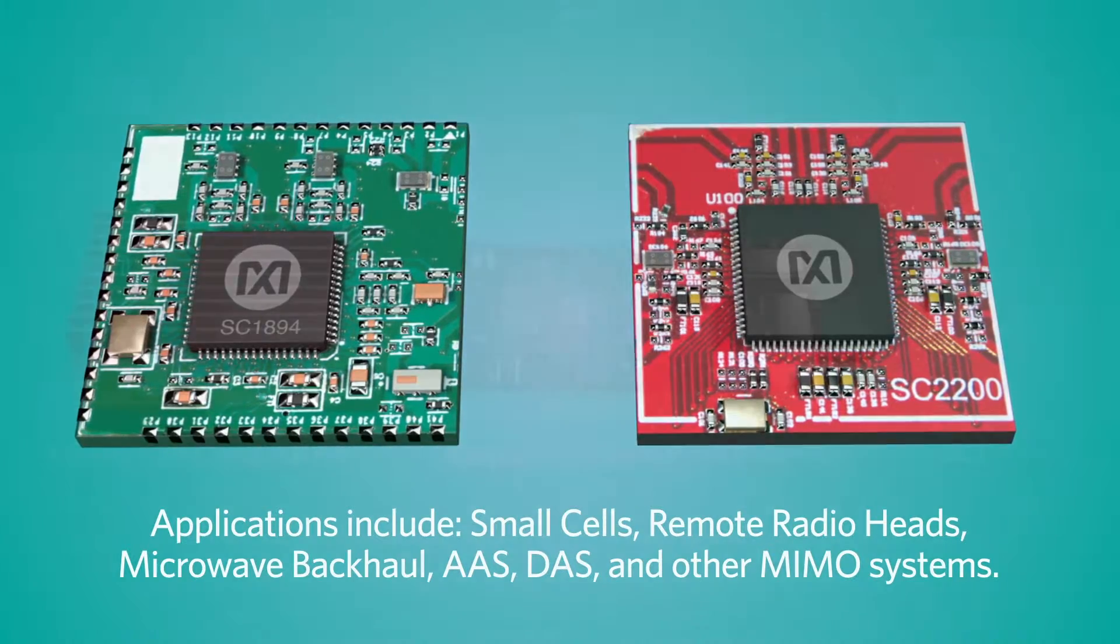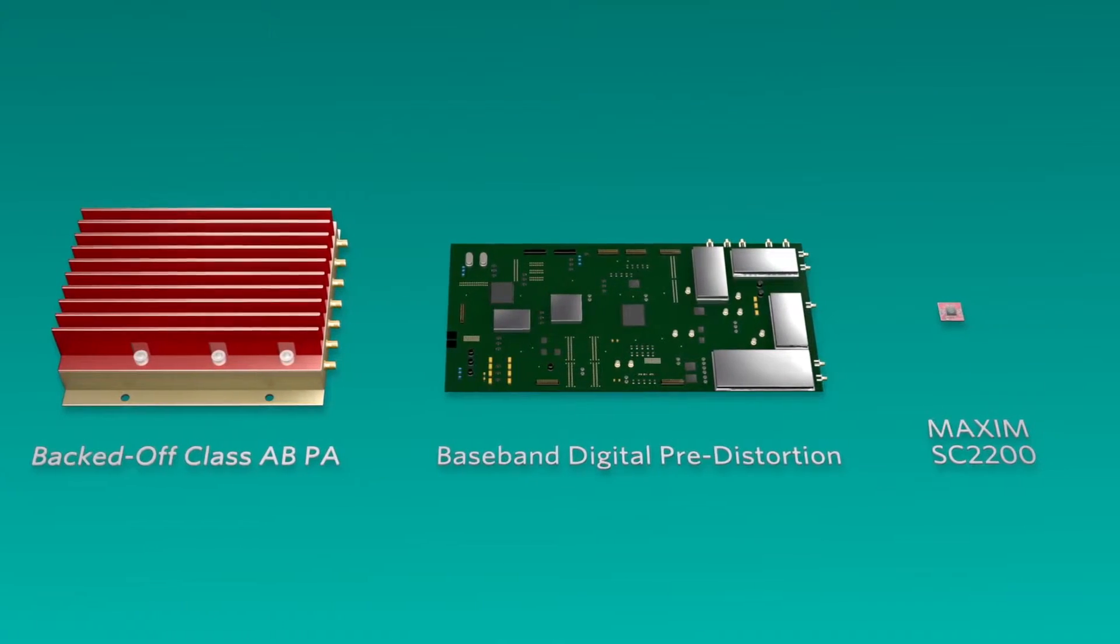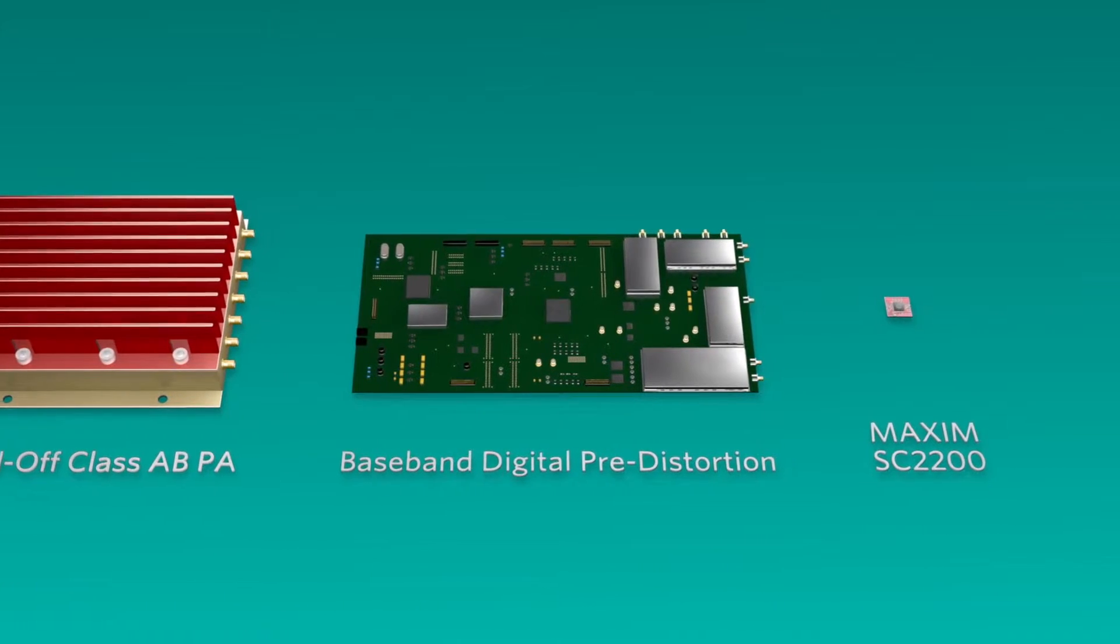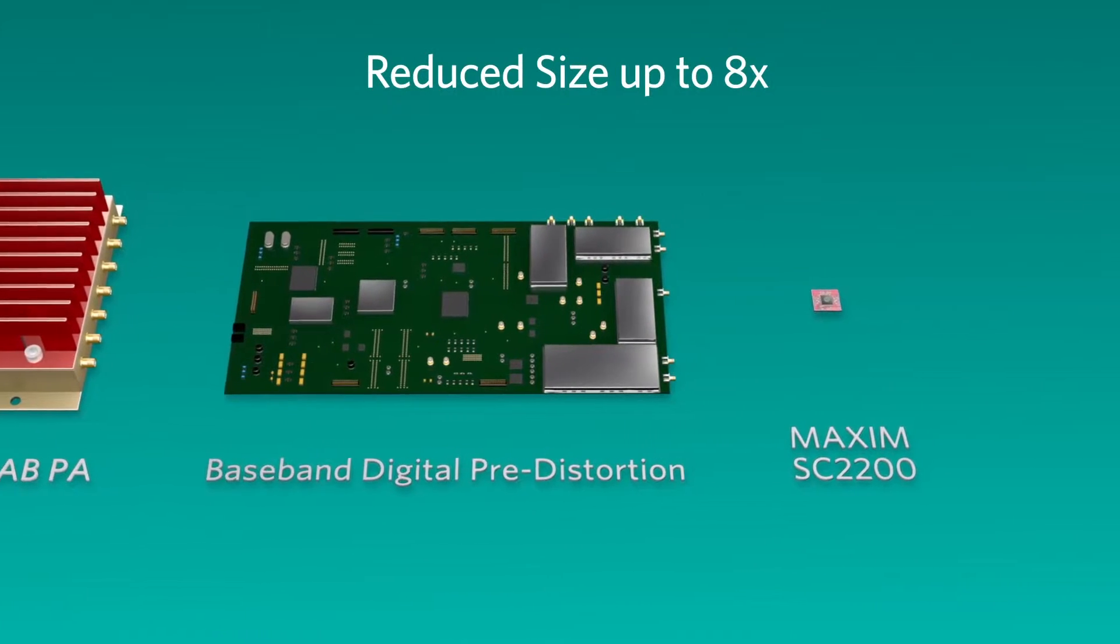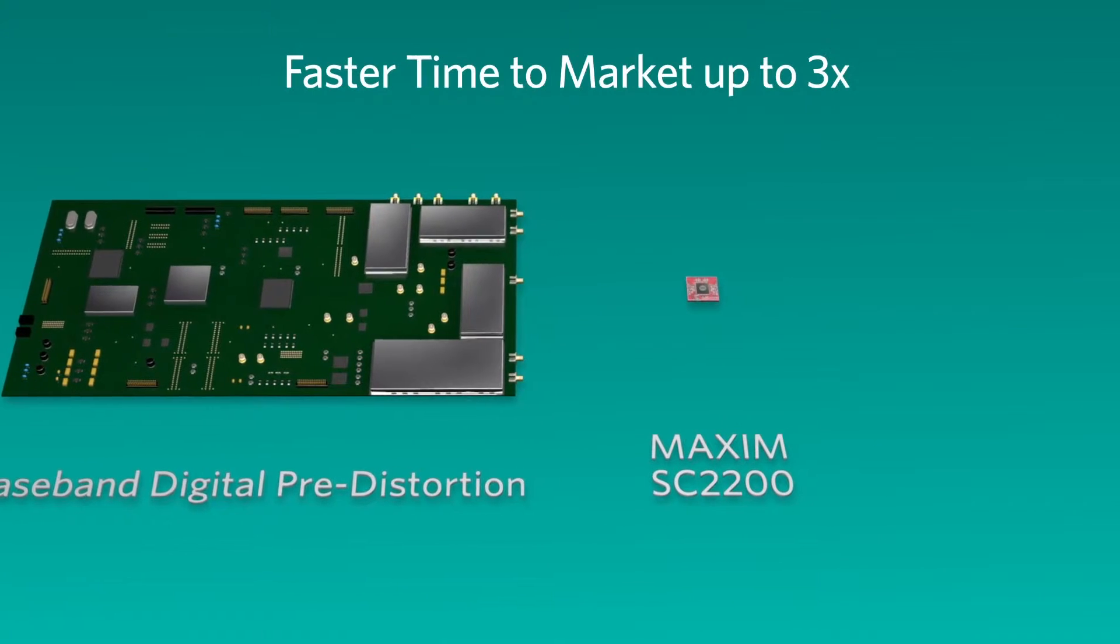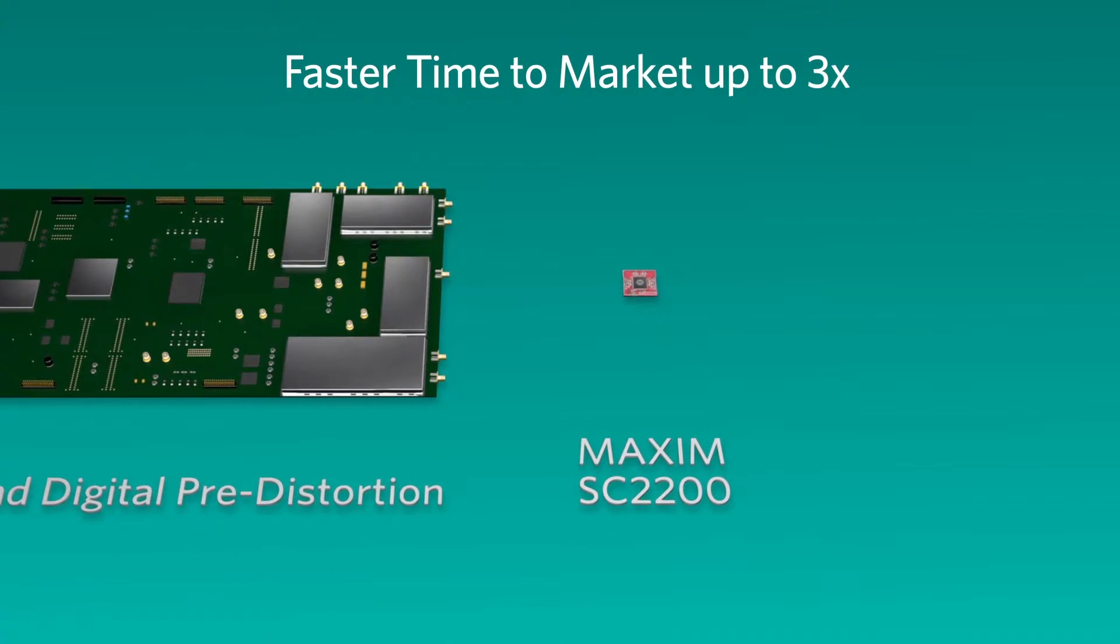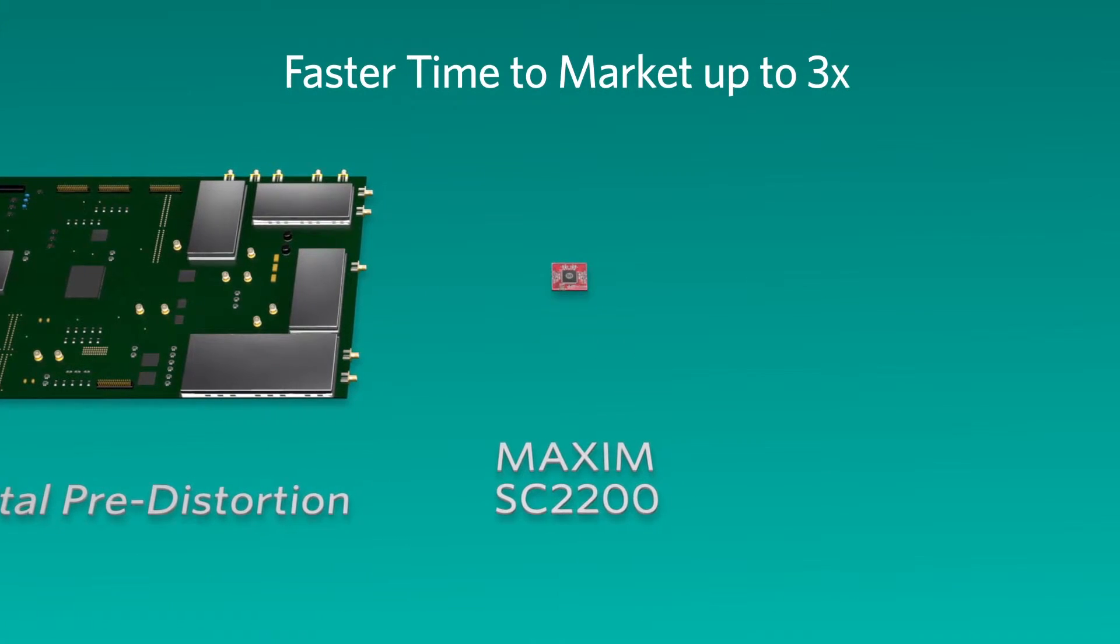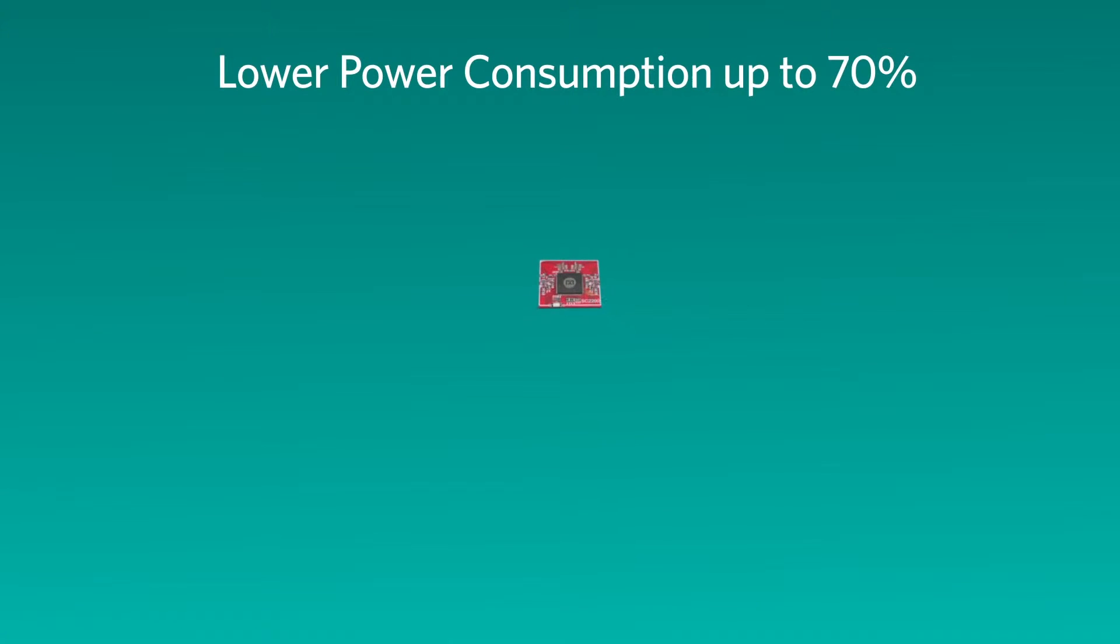Key advantages over backed-off Class A PAs and baseband DPD include reduced size up to 8 times smaller, reduced material cost up to 50%, faster time-to-market, reduced burden involving the complexity around designing a system with DPD, and lower power consumption up to 70% in comparison with back-off.